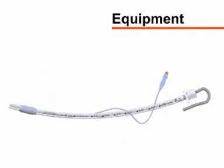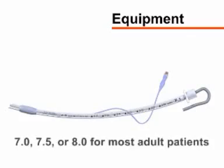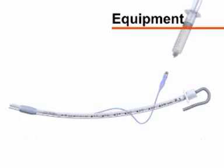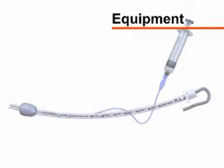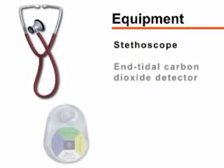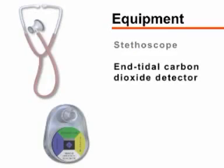Endotracheal tubes are sized according to the internal diameter of the tube. 7.0, 7.5, or 8.0 mm tubes are appropriate for most adults. The tubes have a balloon on the distal end that, when inflated, creates a seal between the tube and the tracheal lumen and prevents air leaks and aspiration of gastric contents. You will also need a stethoscope and an end-tidal carbon dioxide detector to assess for proper placement of the endotracheal tube.